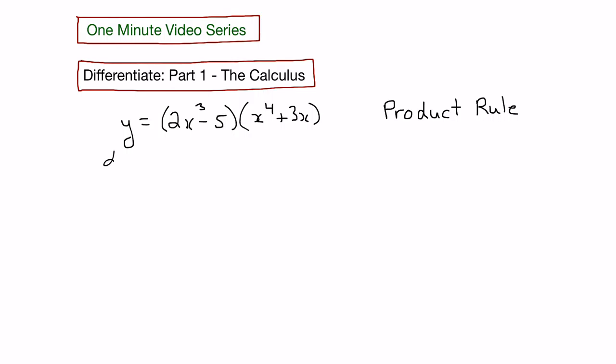So the product rule states that the derivative would be the first function, 2x cubed minus 5, times the derivative of the second, plus the second function, x to the fourth, plus 3x,